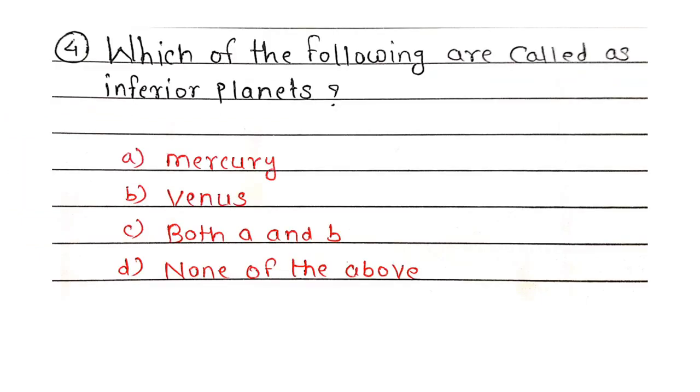Fourth question: Which of the following are called as Inferior planets? Correct answer, Option C, Both A and B. Aplia surya maal e til mercury manjej būdh aani venus manjej shukra. He doon graha prithwi cha kakshacha aat aayet manun tiyan na inferior planet sa samanthat. Tar baqi sarva graha he prithwi cha kakshacha baher aayet manun tiyan na superior planet sa samanthat.